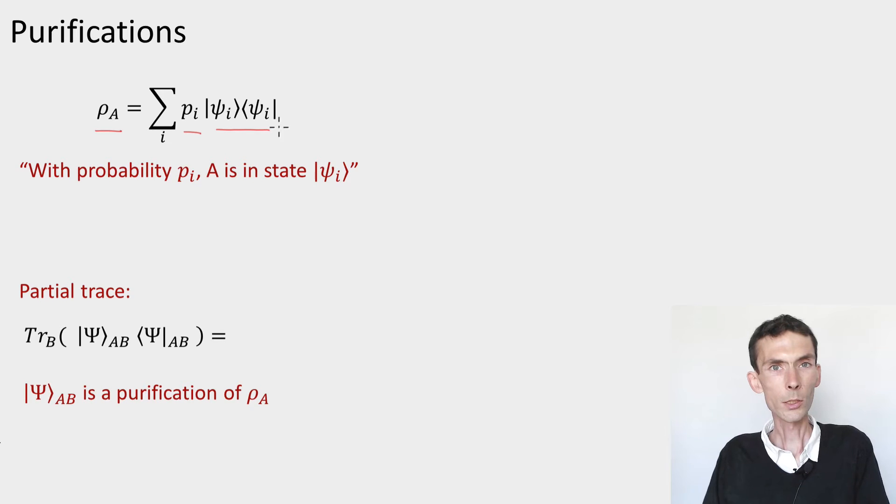So you can always compute this decomposition using the singular value decomposition. The way we interpreted this is by saying that, all right, this is a mixture, and what it means is that with probability pi, the state on A is in the pure state psi i. So where does this probability arise from? Who gets to decide what state we're actually on?